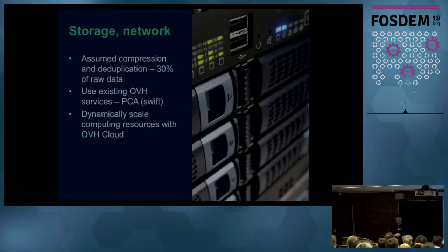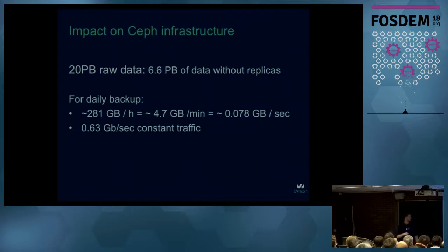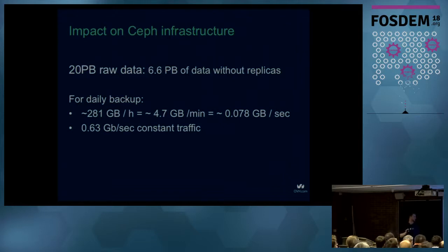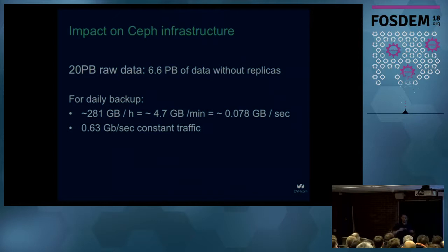At the time we had 20 petabytes of raw data across three copies, giving us 6.6 petabytes effective. Backing this up daily works out to about 281 gigabytes per hour, 4.7 gigabytes per minute, or roughly 0.63 gigabits per second — which doesn't sound bad on 40-gigabit NICs. We calculated raw hard drive speeds similarly and concluded we can back up everything in a few hours if things are running well.